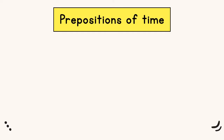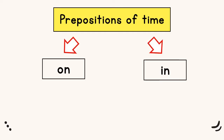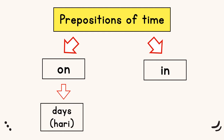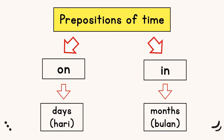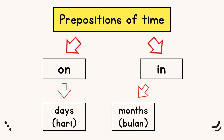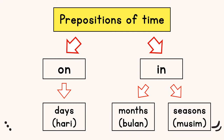We have two prepositions of time, which are ON and IN. ON is for days and IN is for months. And today we are going to look at another one — IN is also used for seasons. IN juga boleh digunakan di depan musim.